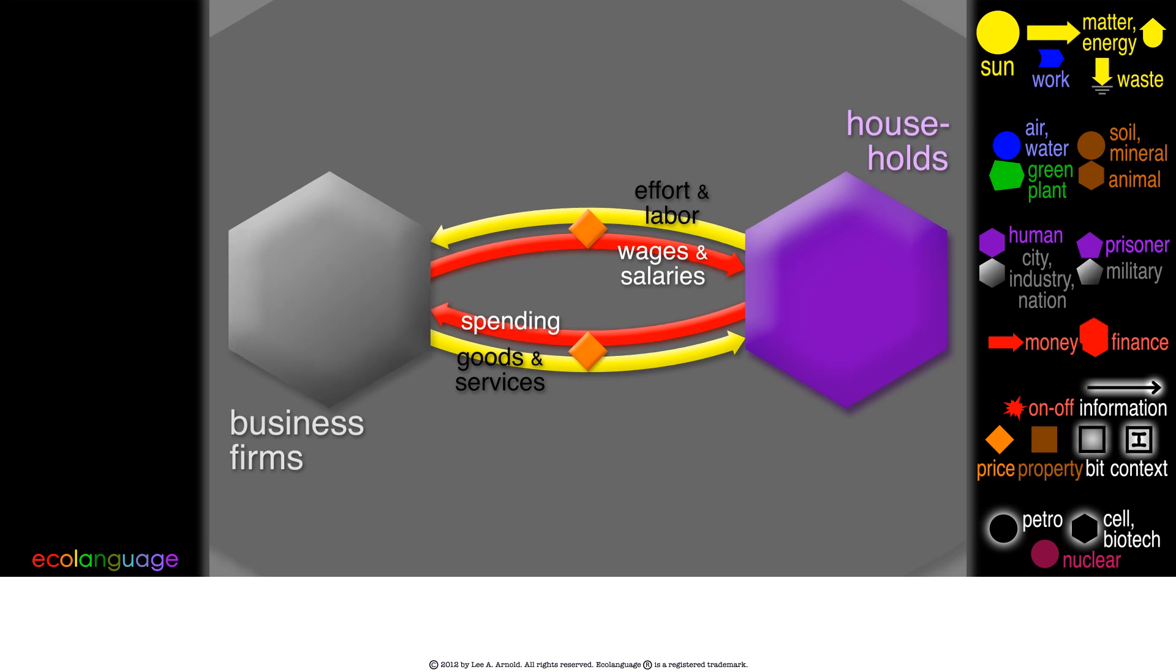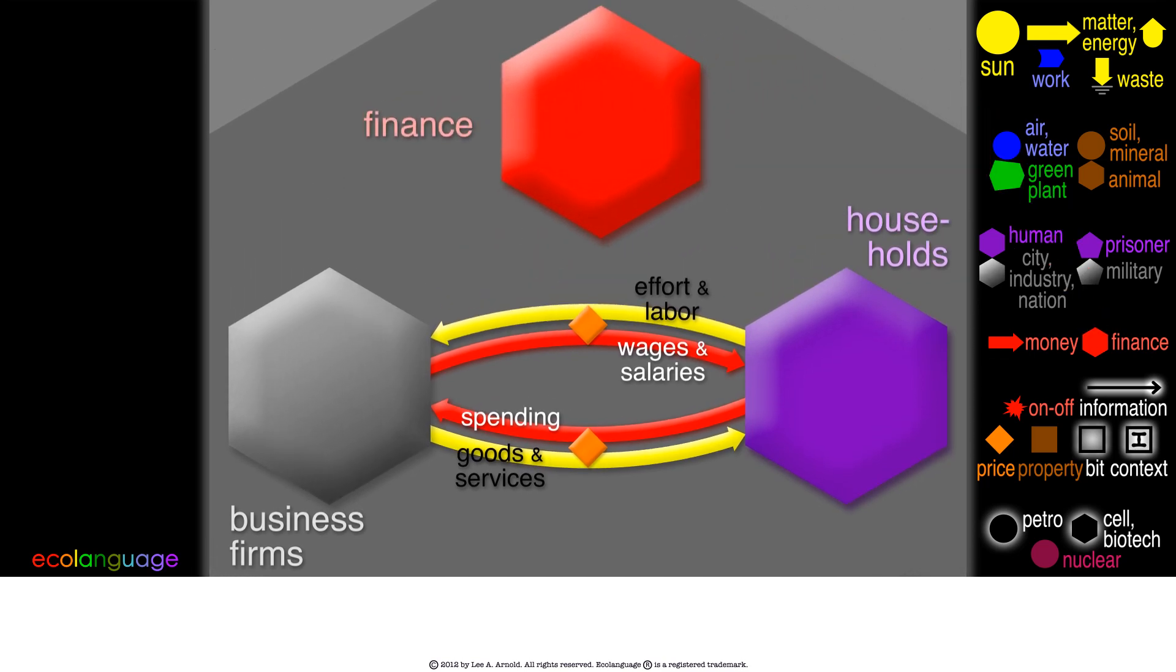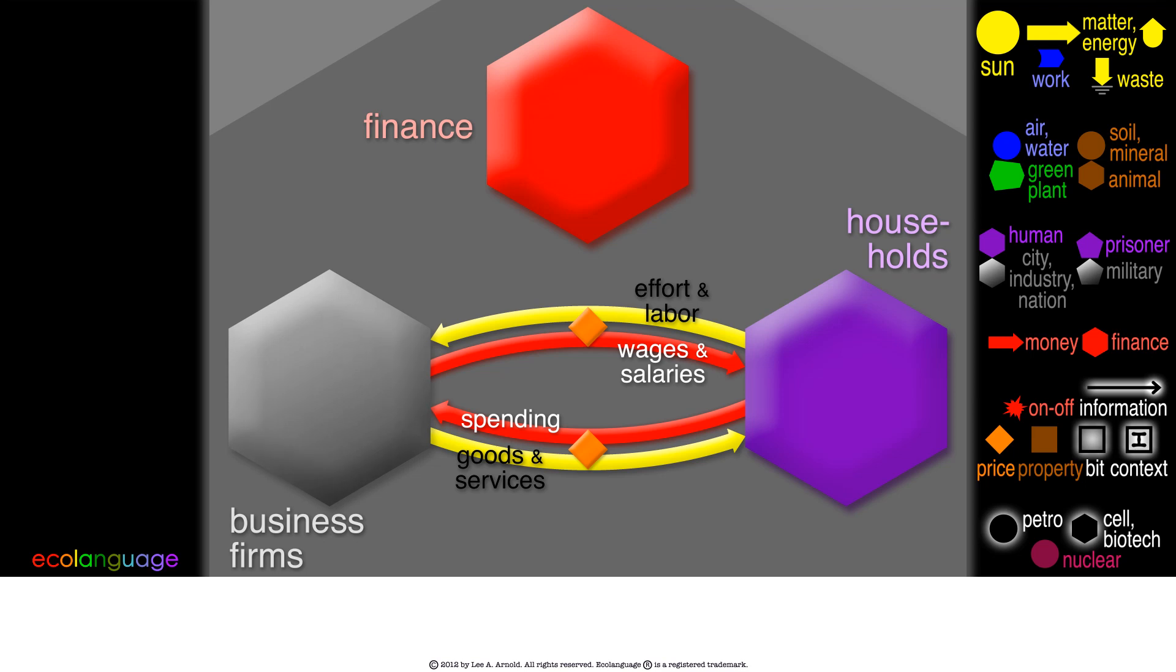Now we'll use the red hexagon for all banks and finance. Households save some of the money. This must reduce consumer spending.